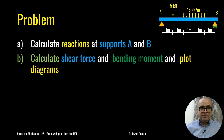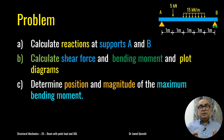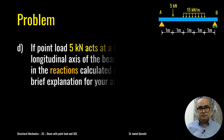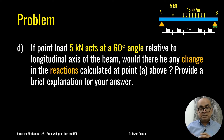This problem has four parts. Part A: calculate reactions at supports A and B. Part B: calculate shear force and bending moment and plot their diagrams. Part C: determine the position and magnitude of the maximum bending moment — since the load is not spread over the entire length, the maximum bending moment occurs at a specific location. Part D: if the 5 kN point load acts at 60 degrees relative to the longitudinal axis, would there be any change in the reactions calculated at A?